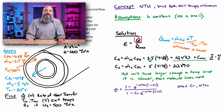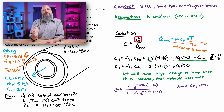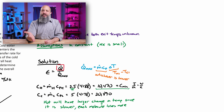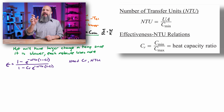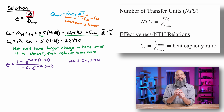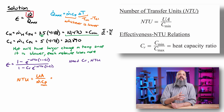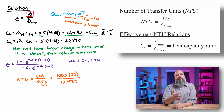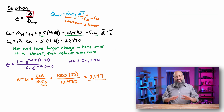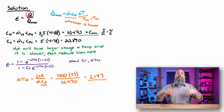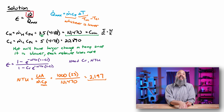NTU is UA divided by M_dot × Cp, using the minimum value for M_dot × Cp. For our problem: 1,000 times 23 divided by 10,470 gives NTU = 2.197. NTU is not a percentage — it can be less than or greater than one — but a larger value means more heat transfer and a smaller value means less. It's a ratio between the UA terms and the M_dot × Cp terms, explaining how much heat will actually flow.